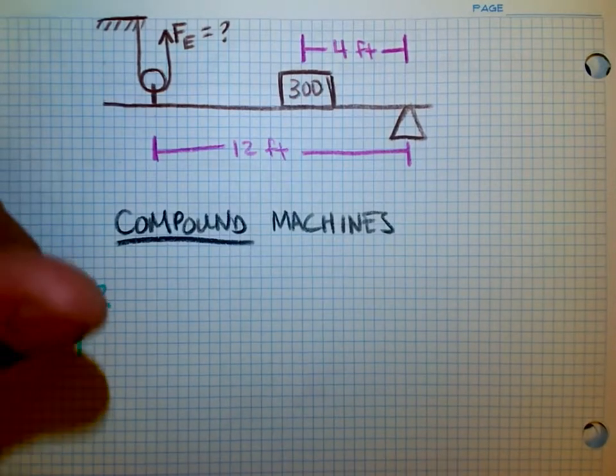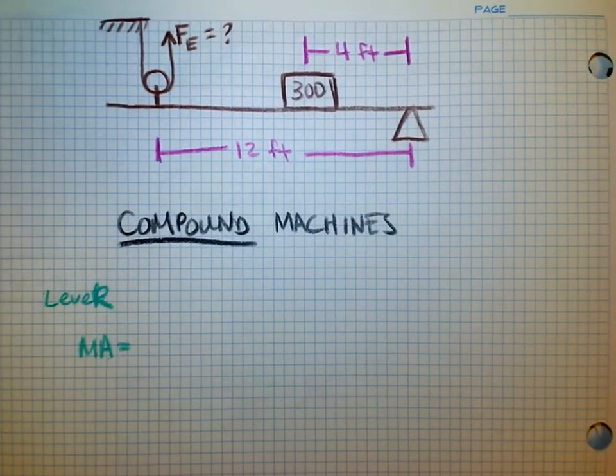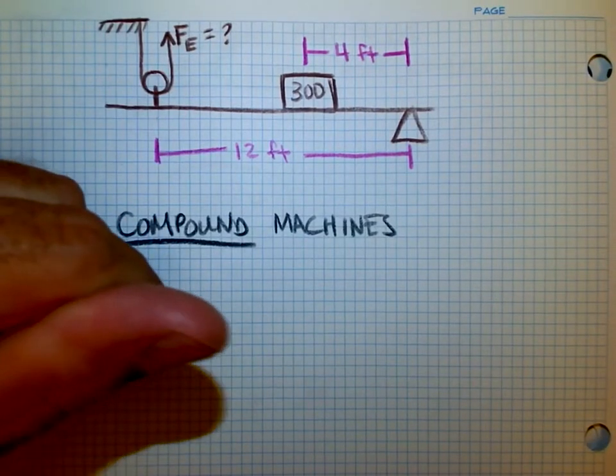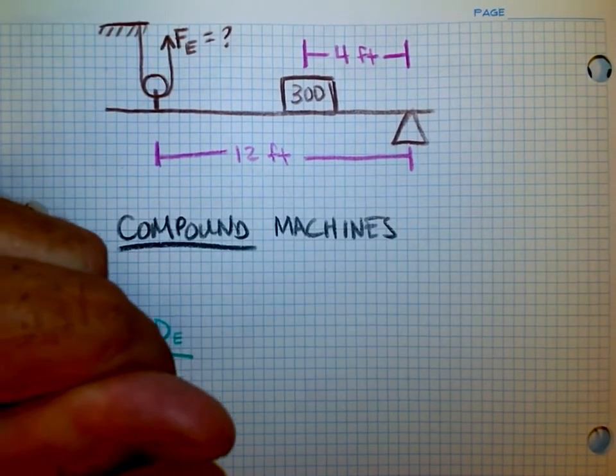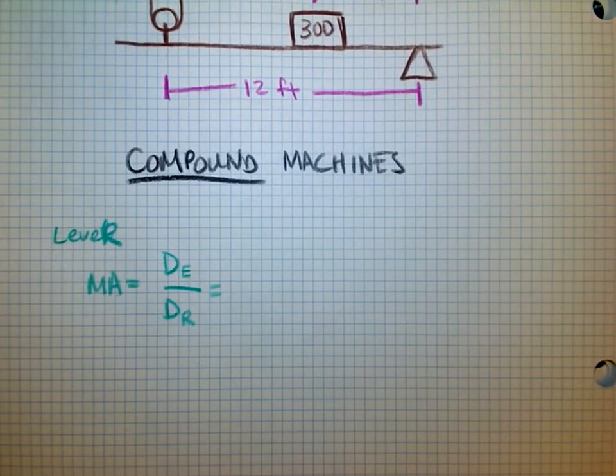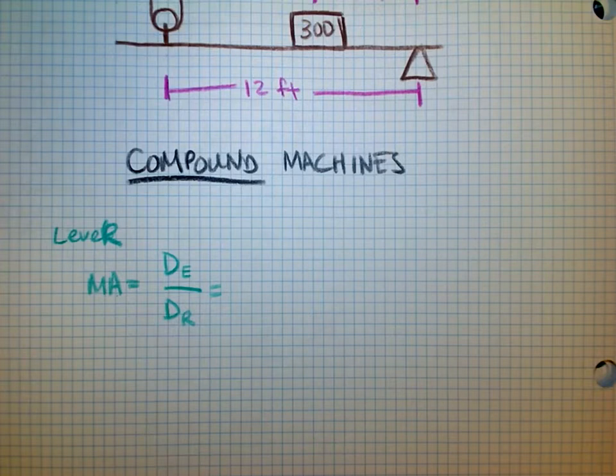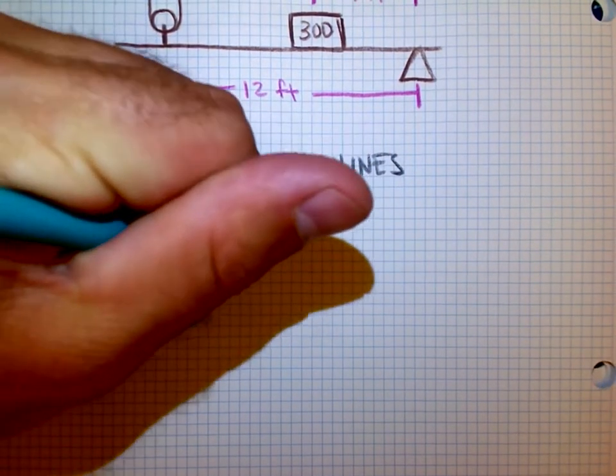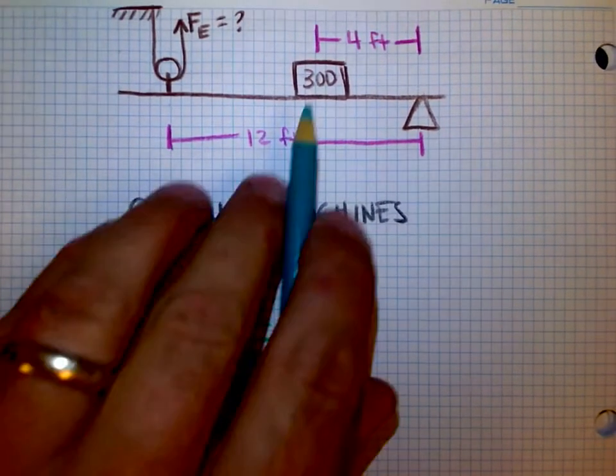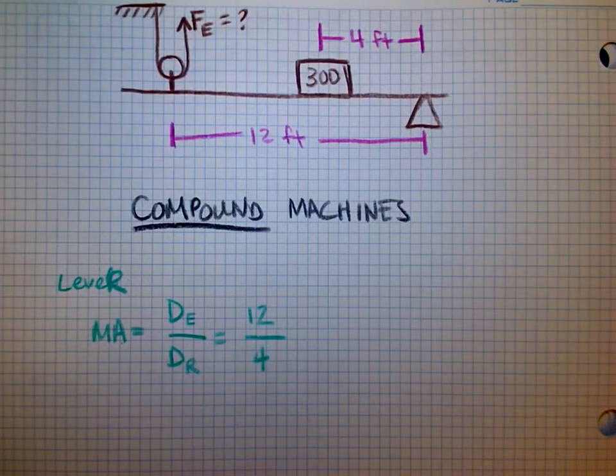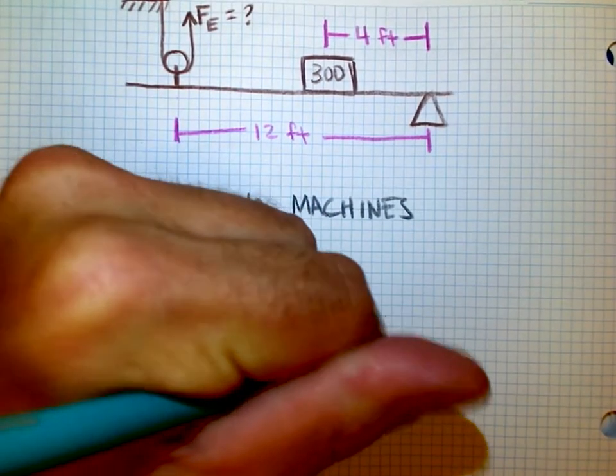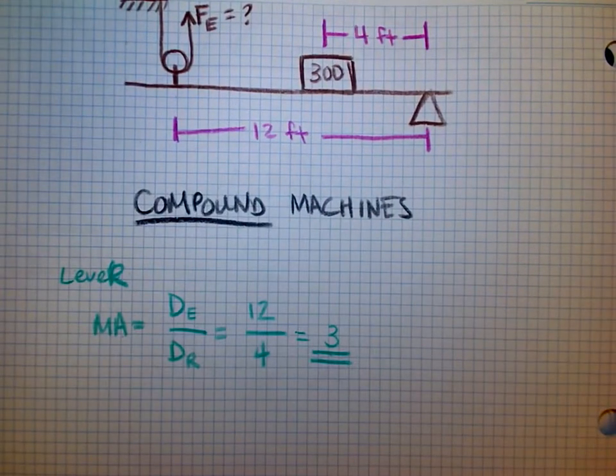I'm going to compare the distance that I had to exert my effort over compared to the distance that resistance force. I can tell here that I lifted from a distance of 12 feet and I had a distance of 4 feet from the 300 pound load to the fulcrum. So whenever I compare those two, it looks like I have a mechanical advantage of 3 from the lever.